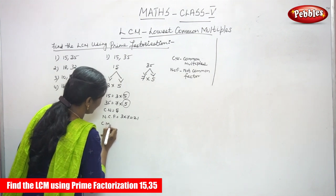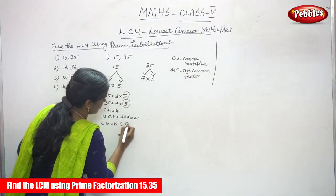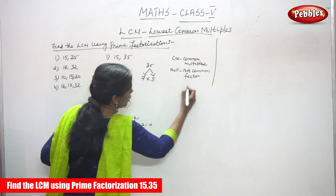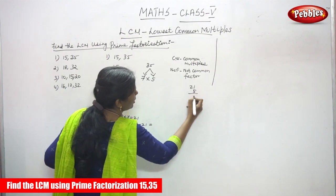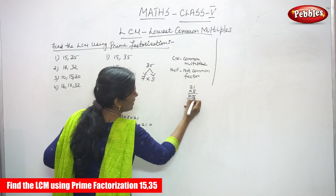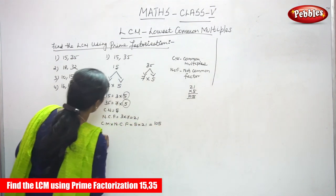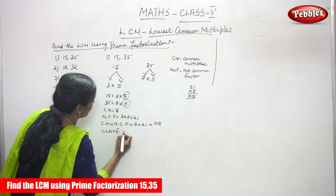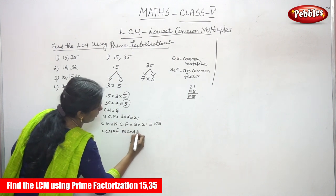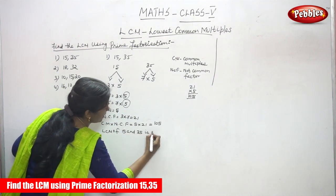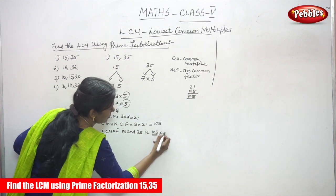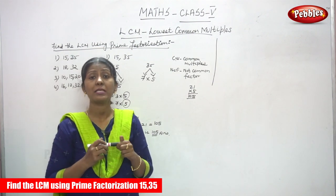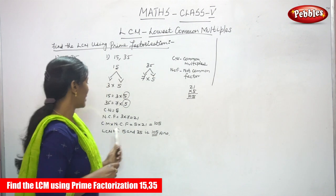Now multiply the common multiple with the not common factor: 5 into 21. You get 105. So, the LCM of 15 and 35 is 105. We found the LCM using the prime factorization method.